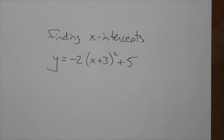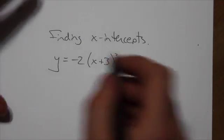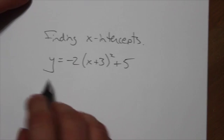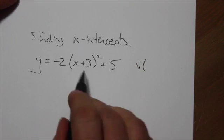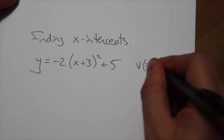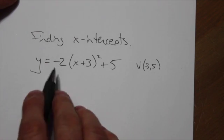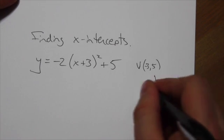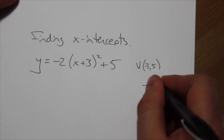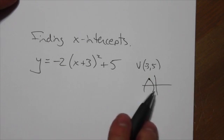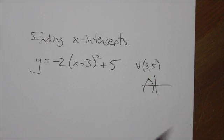Now, before we even jump into this, one of the things you want to do is get a sense, am I even going to be able to find x-intercepts here? Well, you know that the vertex here is the point (-3, 5), and you know, based on the value of the a constant here, that this thing is going to open down. So really rough sketch. I know the vertex is going to be over here. It's going to open down. And so, yeah, I can see right away that this thing is going to have two distinct x-intercepts.